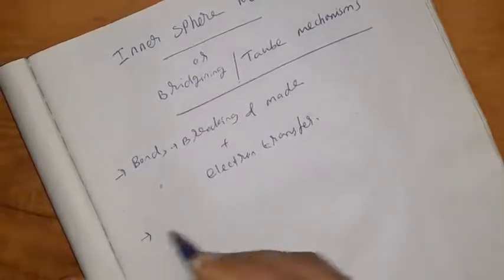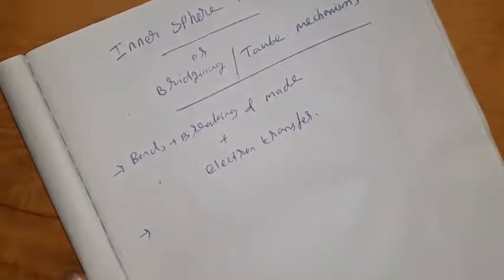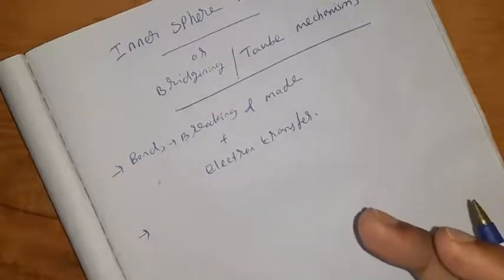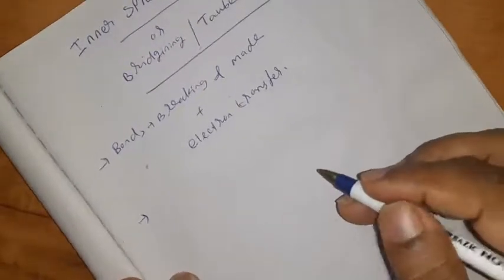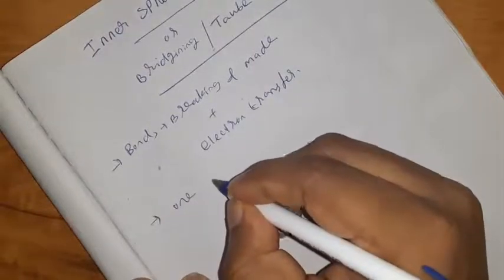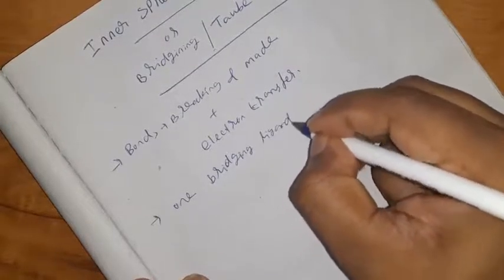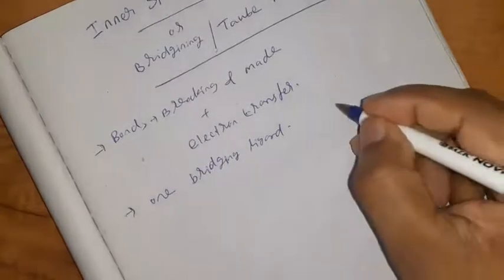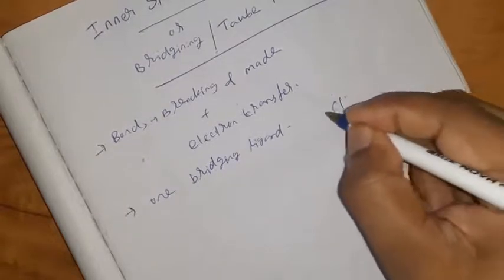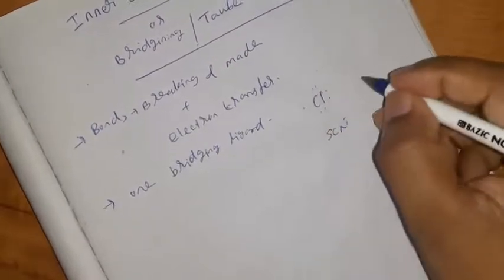The condition for inner sphere mechanism is that there must be a bridging ligand. If electron exchange involves a bond, then there must be at least one bridging ligand present.